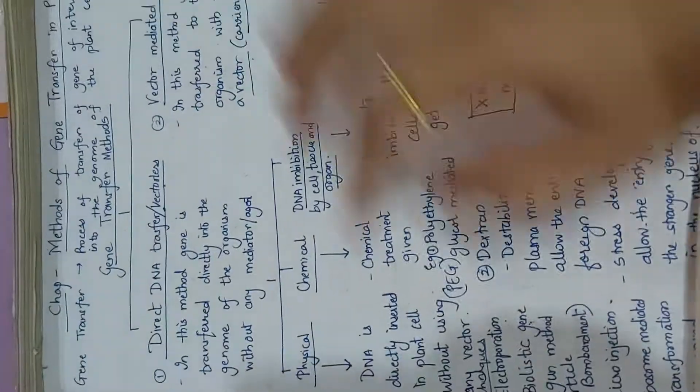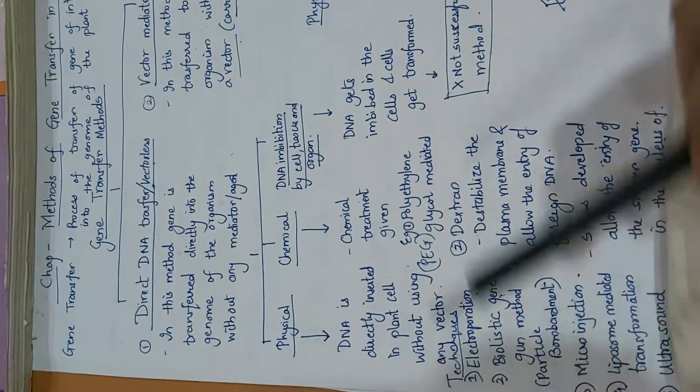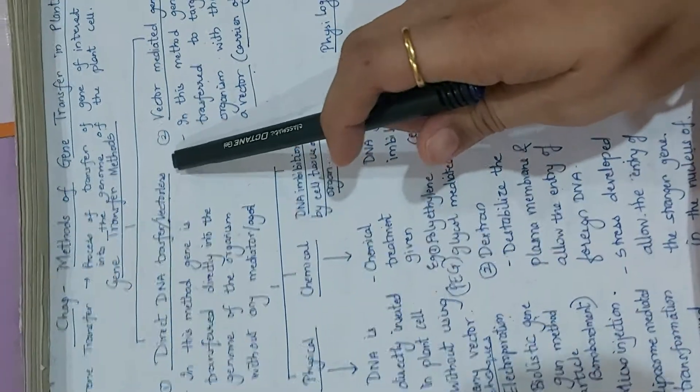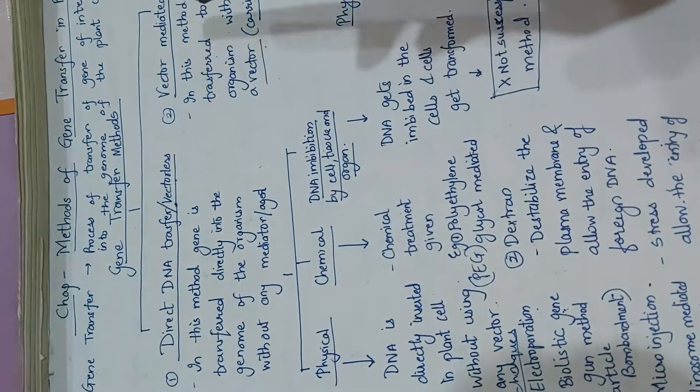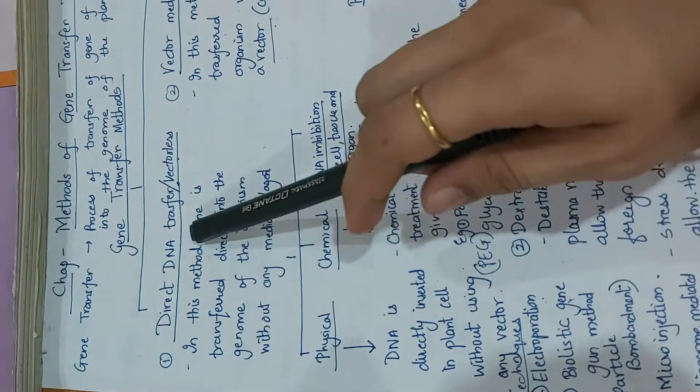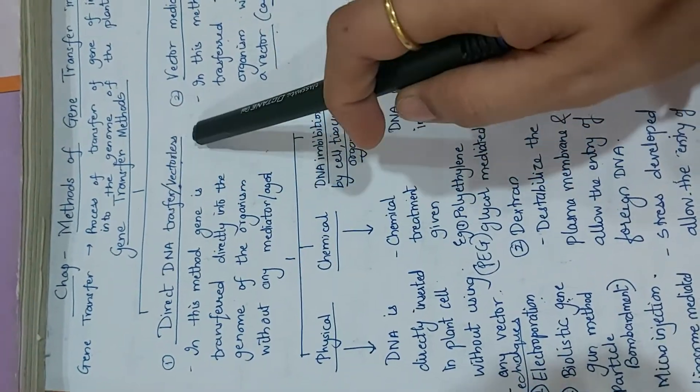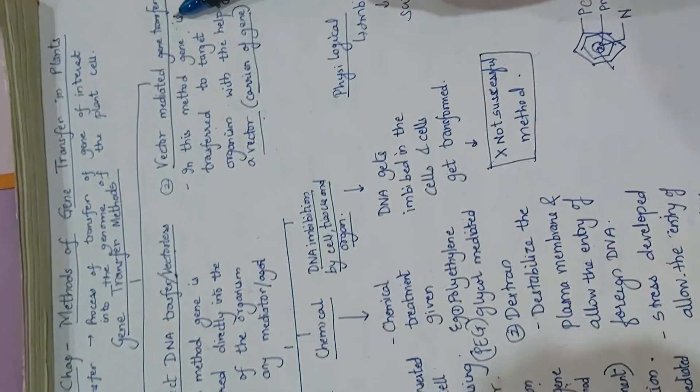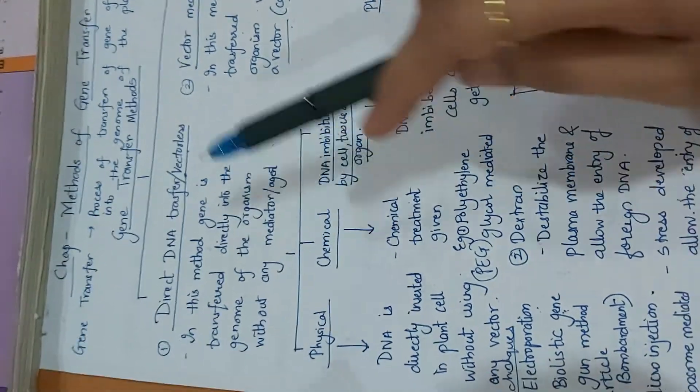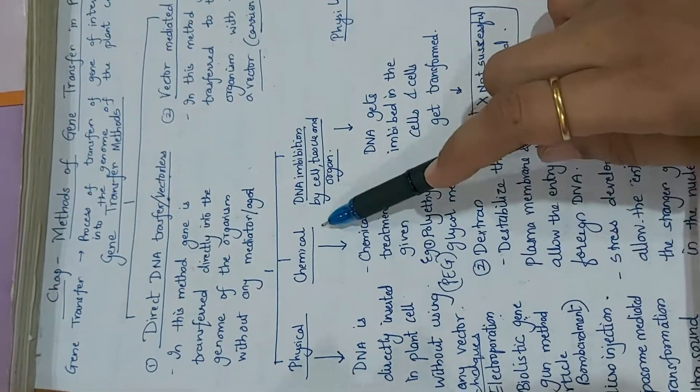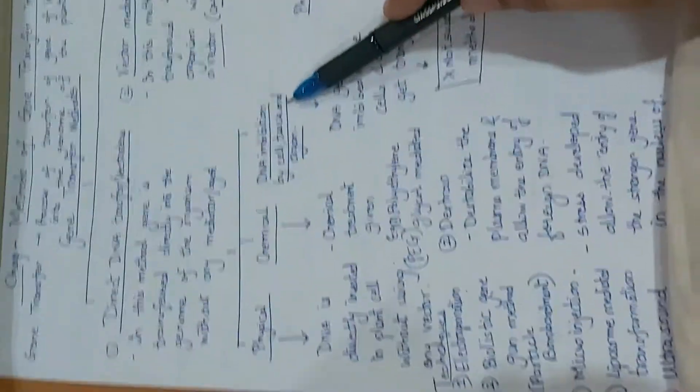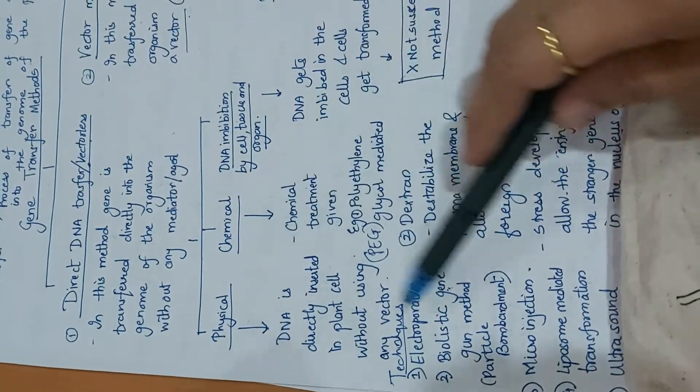Hello students, till date we have learned about the direct DNA transfer method. As discussed, there are two types of transfer methods: direct DNA transfer, that is a vectorless method, and vector mediated gene transfer method. In direct DNA transfer method, there were three types: physical, chemical, and DNA imbibition by cell, tissue, and organs.